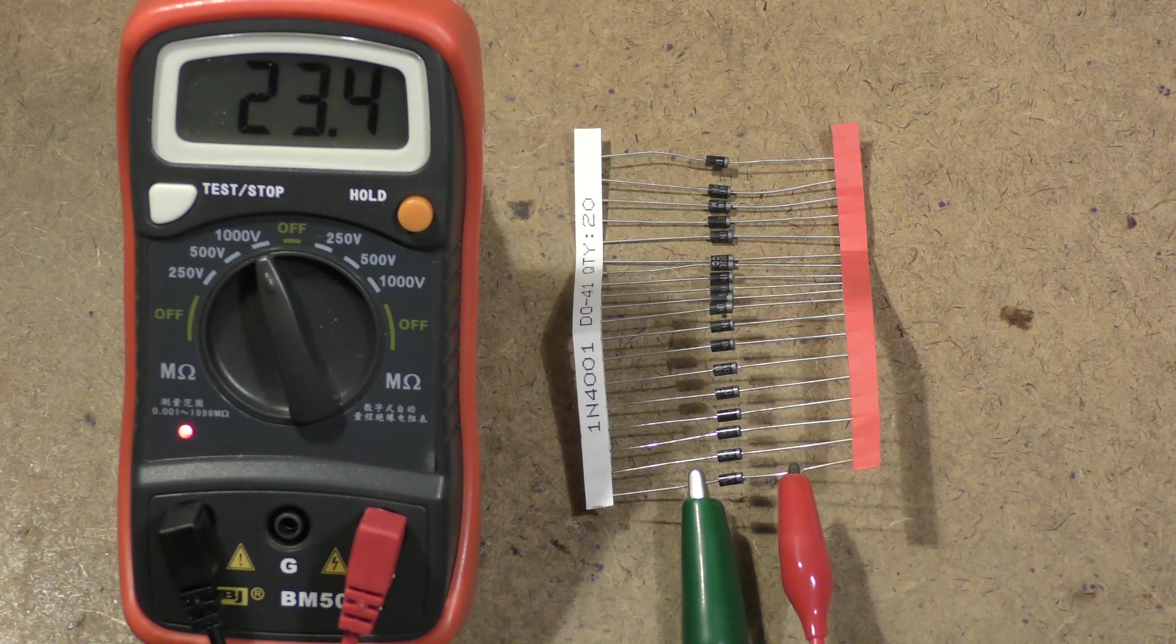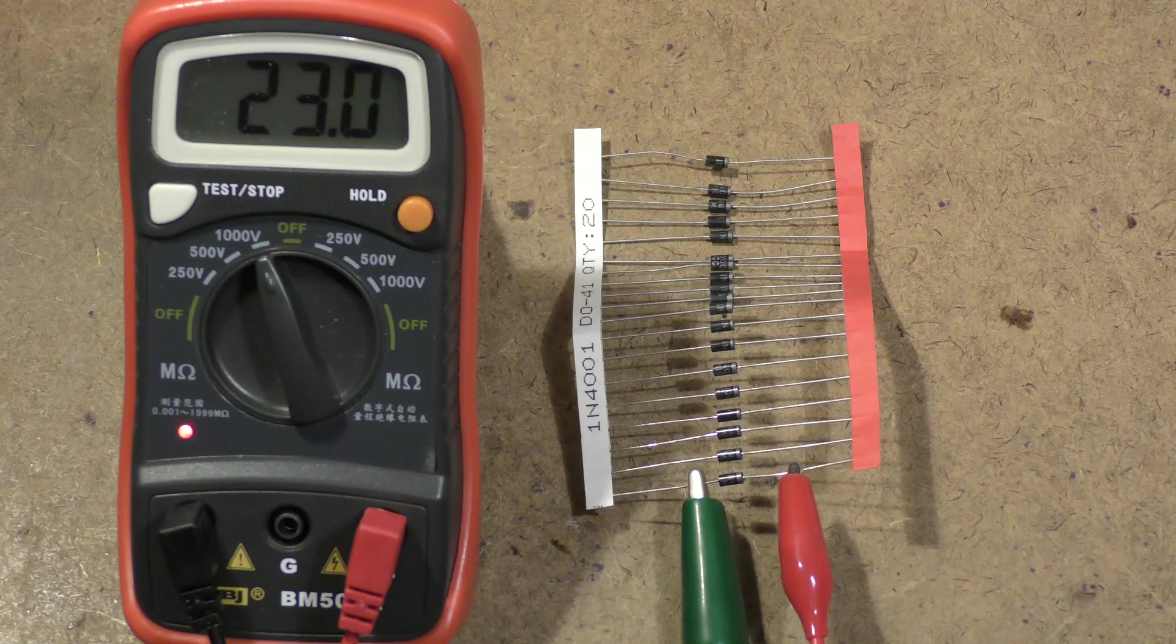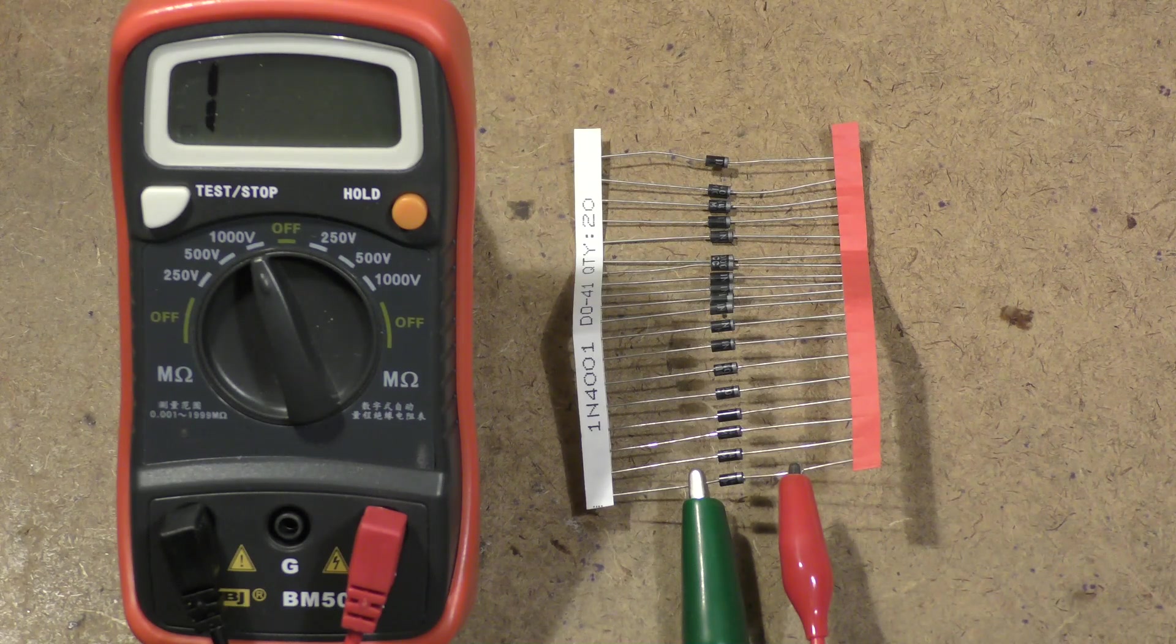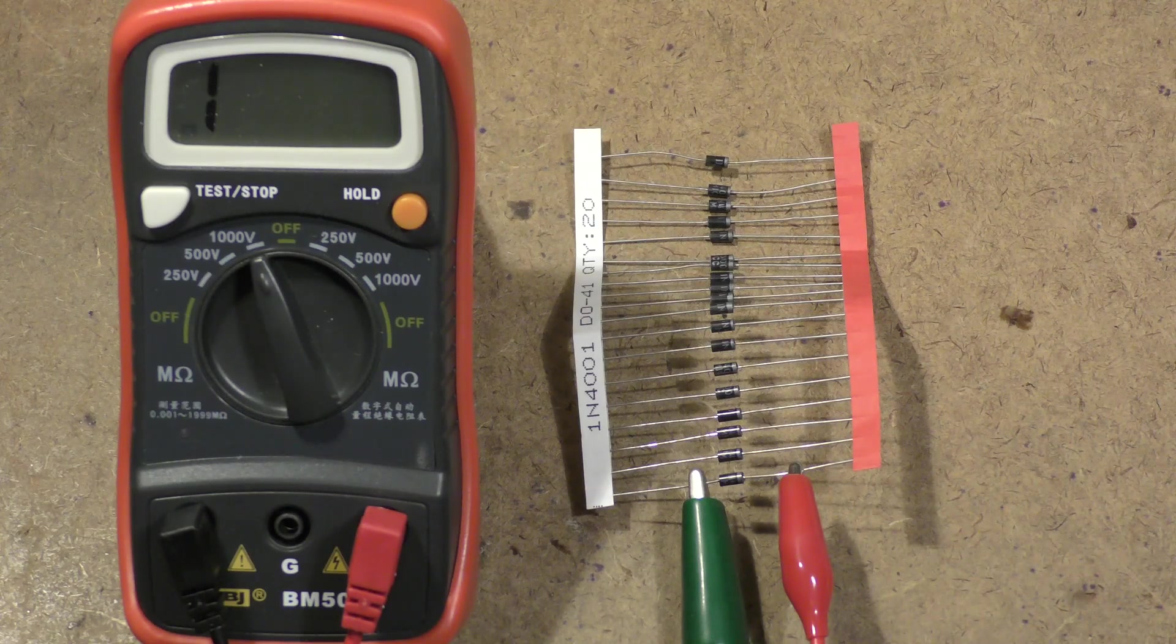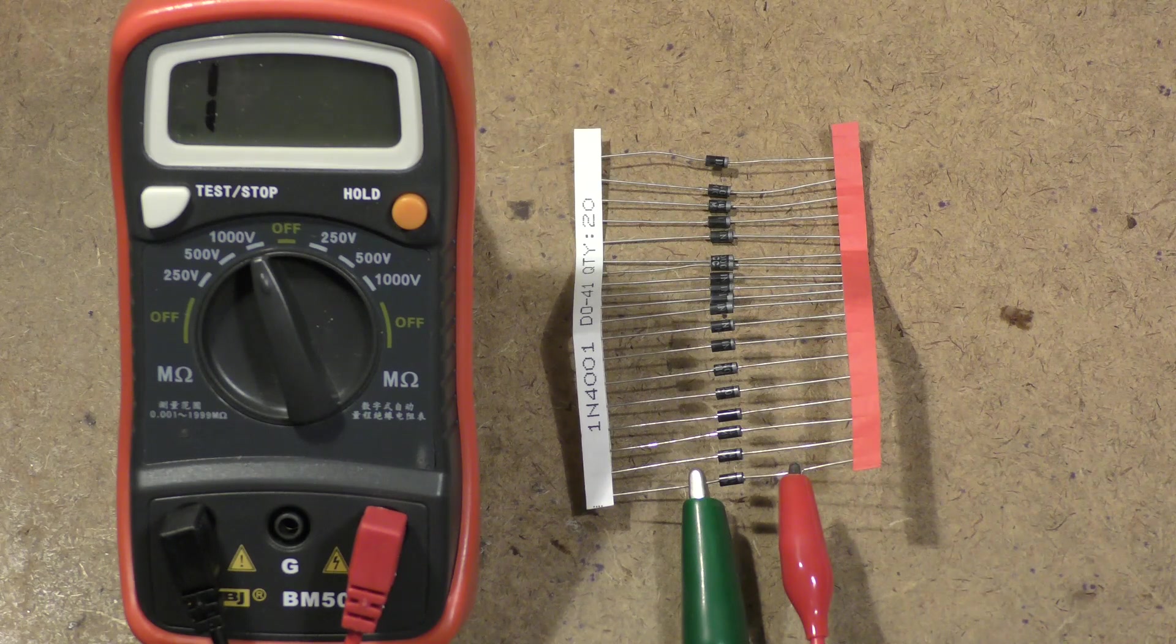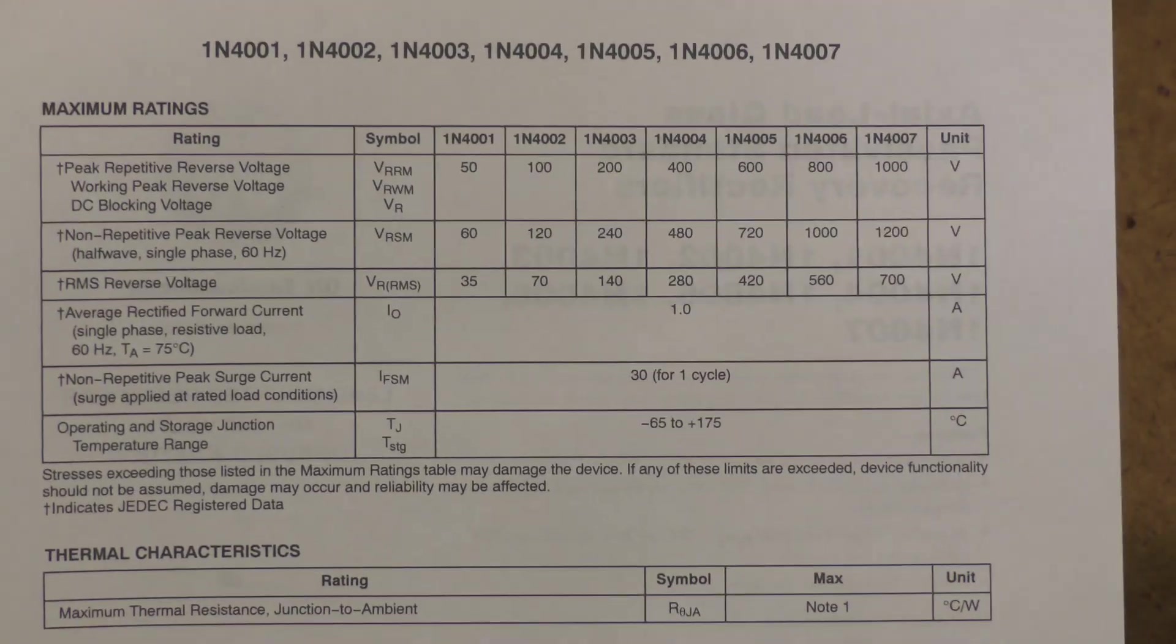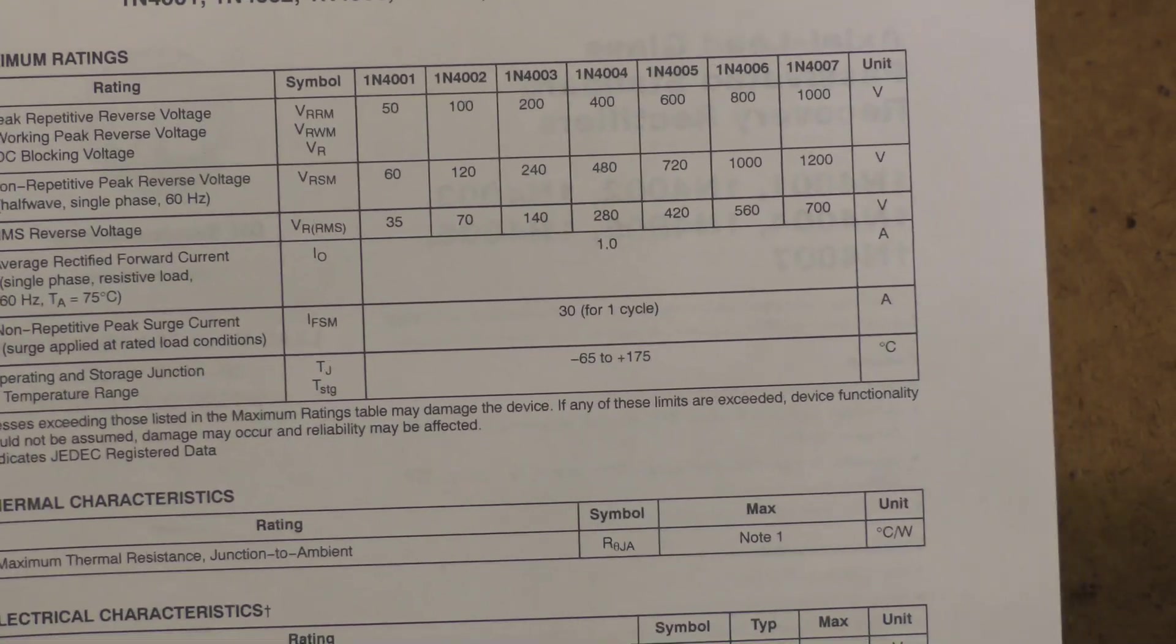How in the world did we get a 4001 diode that performs like a 4007, which has a thousand volts of breakdown? The difference is in the processing. Impurities in semiconductor processing can change the characteristics of the semiconductor, and the manufacturer has to account for that when they provide their specifications.